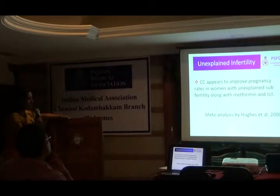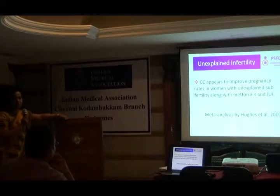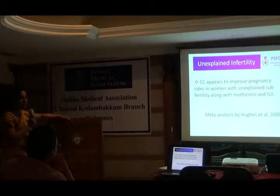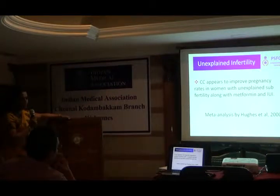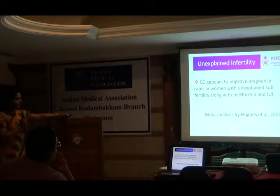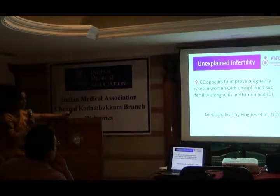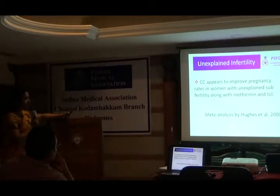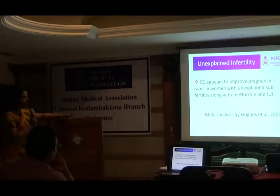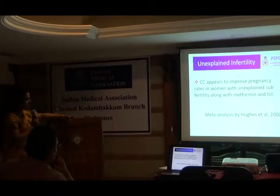Unexplained infertility is when the patient — husband and wife — comes to you and you have tested everything: the tubes are normal, the ovaries are normal, she is normally ovulating, the husband's count is normal, and there is no problem with intercourse. Those people are explained as unexplained infertility. In those people, when you give them clomiphene citrate along with metformin and IUI — intra-uterine insemination — it increases the pregnancy rate.